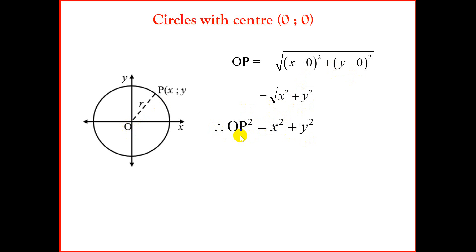Now note, OP is our radius. So we can say x² + y² = r², which is the equation of our circle with center (0, 0).